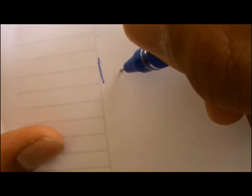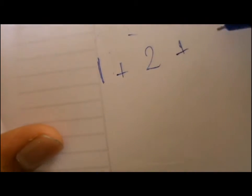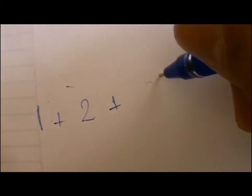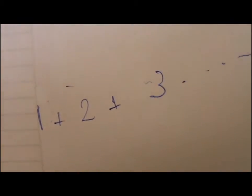Now, we all know what natural numbers are, right? One, two, three, four, five, and so on. But have you ever wondered what the sum of all the natural numbers is? So, one plus two plus three and so on.